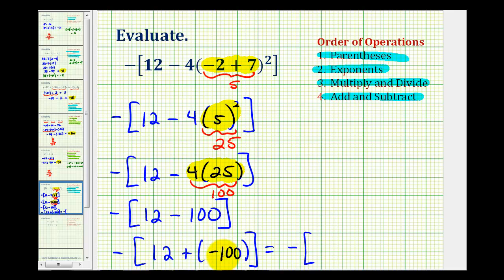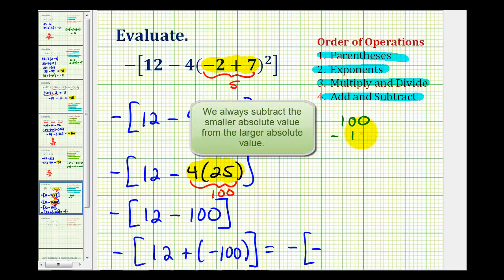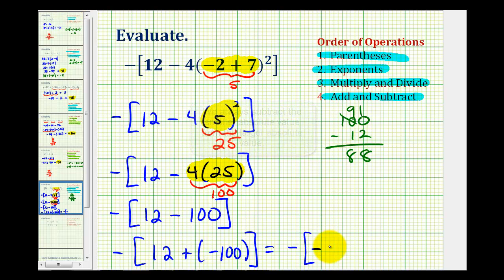These integers have different signs. And notice how the negative is going to outweigh the positive. So the sum will be negative. And then because they have different signs we'll have to subtract their absolute values. Well the absolute value of negative 100 would be 100. And the absolute value of 12 is 12. 100 minus 12 would be 88. So the sum is negative 88.